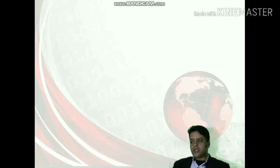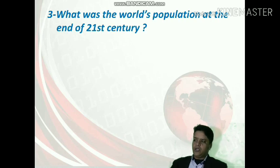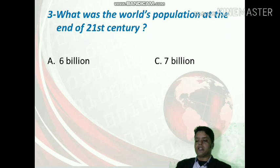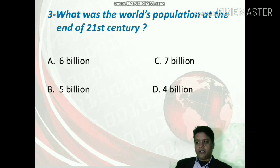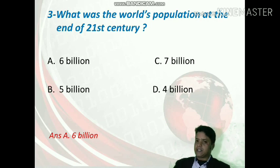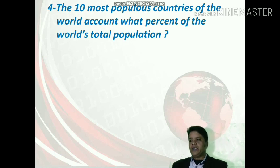The next question is: what was the world population at the end of the 20th century? The options are 6 billion, 7 billion, 5 billion, or 4 billion. The correct answer is option A — world population was 6 billion.